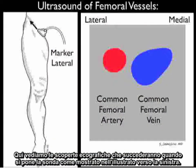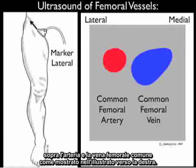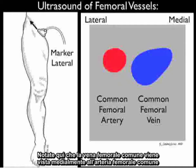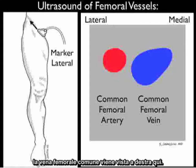Here we see the ultrasound findings that occur when placing the probe as shown in the illustration to the left. The probe is placed with the marker dot laterally, just inferior to the inguinal ligament over the common femoral artery and vein, as shown in the pictorial to the right. Notice that the common femoral vein will be seen medial to the common femoral artery, and because we have the marker dot oriented laterally, the common femoral vein will be seen to the right here.